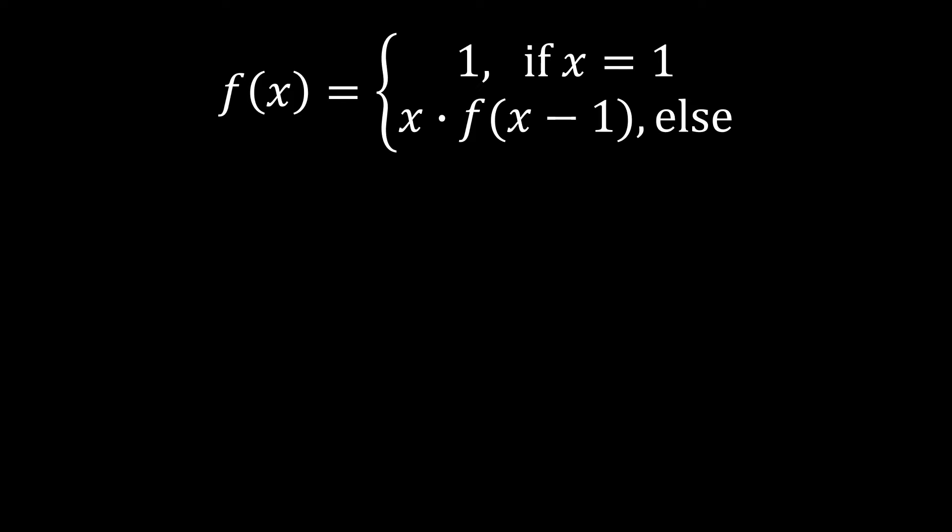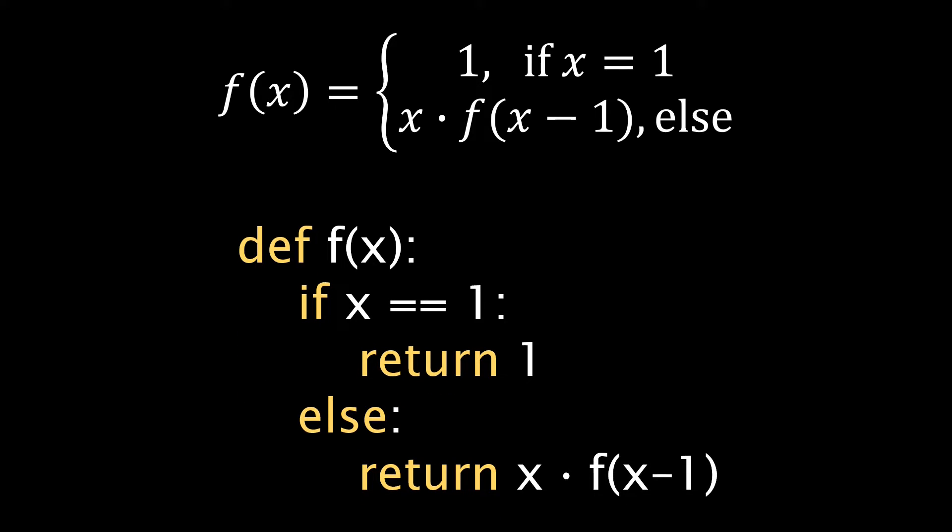We can directly implement this inductive function as an algorithm. Here is the factorial function in Python code. We define the function f and test what value the input has. If the input is 1, we return 1, else we return x times the factorial of x minus 1. The inductive mathematical definition and the Python program are very close. This Python function is an example of a recursive algorithm. Recursion is one of the most powerful tools in our programming toolbox.